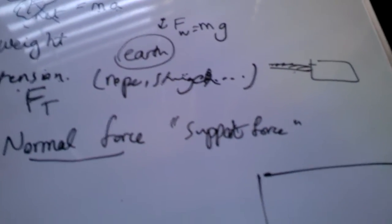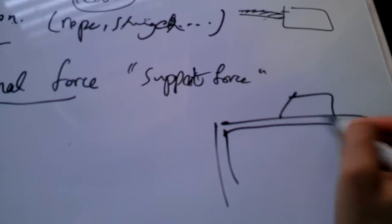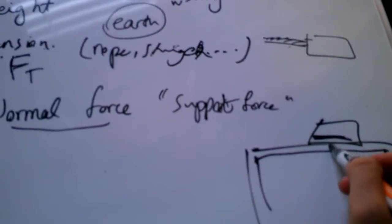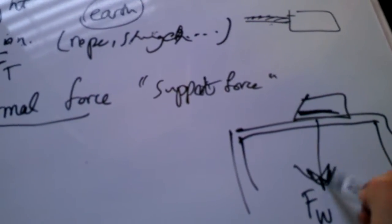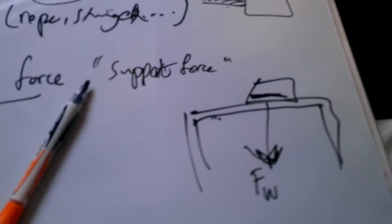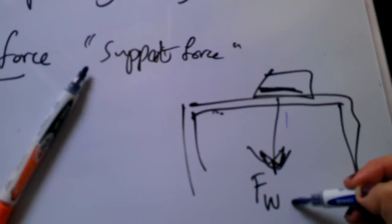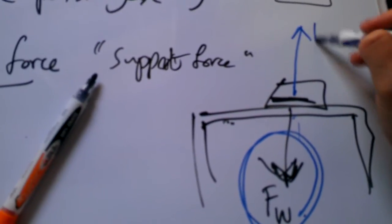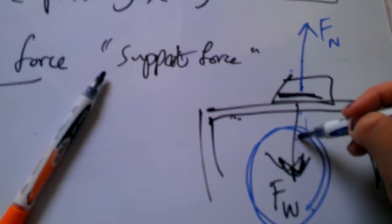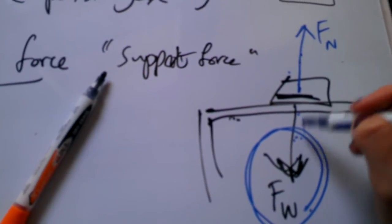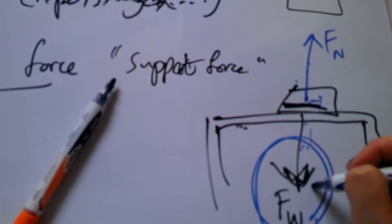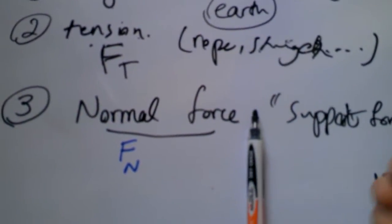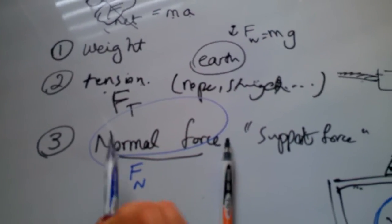Let's say here is a table, here is a notebook on the table. If I let the notebook go, it drops down by its weight. Now, what table does, table basically prevents this from falling and following this force. Table exerts a normal force exactly the same amount but in the opposite direction such that this doesn't fall down. We call this normal force. So if you have floor, table, some sort of a support, you always have a normal force. We don't forget that.